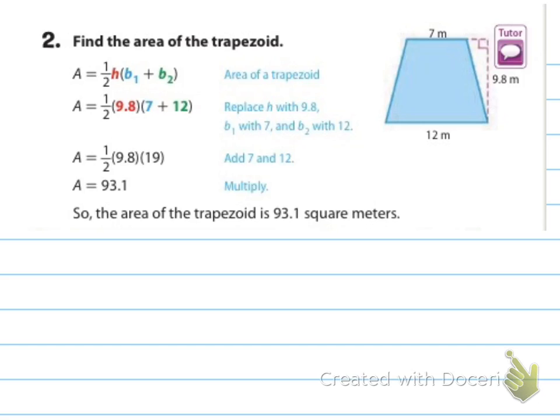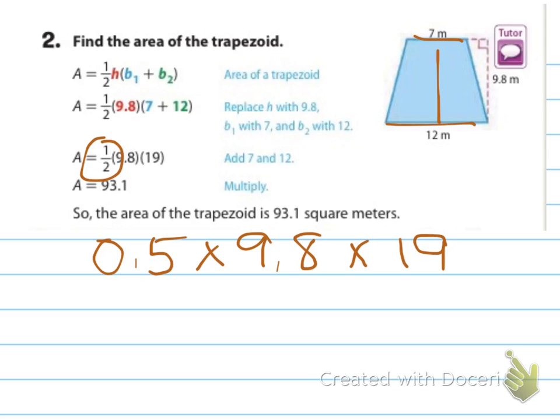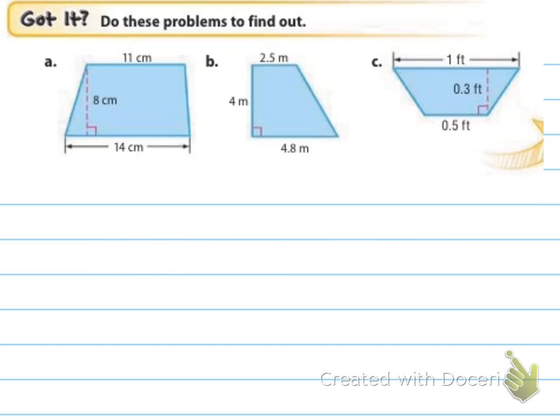Example number two says find the area of the trapezoid, and they show us that the bases are 7 and 12. So, of course, that's going to be added together to make an odd number. And then it's showing us that the height is 9.8 meters. So, we're going to get stuck having to do some kind of math here. Sometimes you just can't get around it. If you want to change this one half to 0.5, and then times that by 9.8, and then multiply that times 19, you're going to have to do some work to get there. But in the end, you're going to get 93.1 after all that amazing math that you get to do.